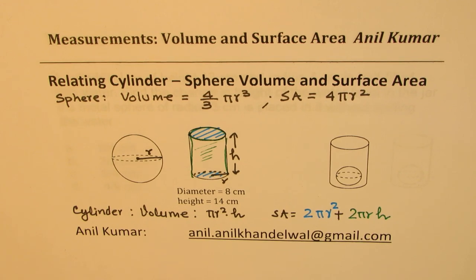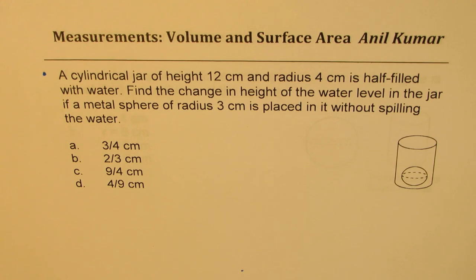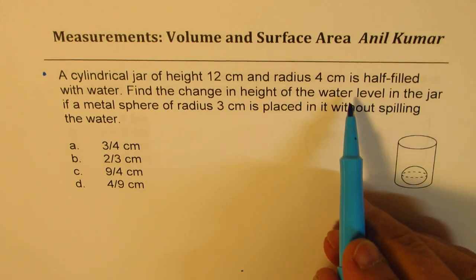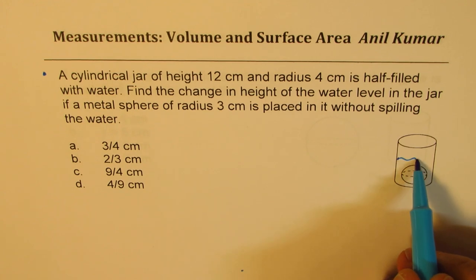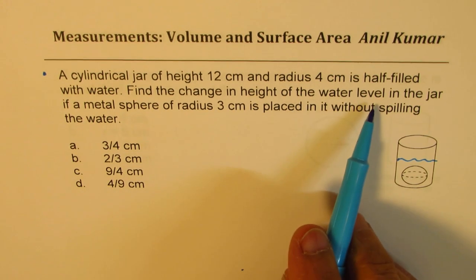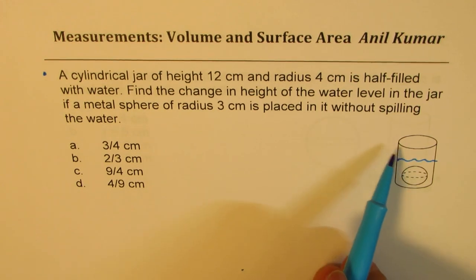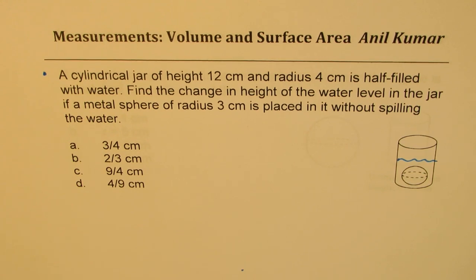With this in mind, let us solve some excellent questions where we mix and match sphere and cylinder. Here is the first question: A cylindrical jar of height 12 centimeters and radius 4 centimeters is half filled with water. Find the change in height of the water level in the jar if a metal sphere of radius 3 centimeters is placed in it without spilling the water. You can now pause the video, answer the question, and then look into my suggestions.